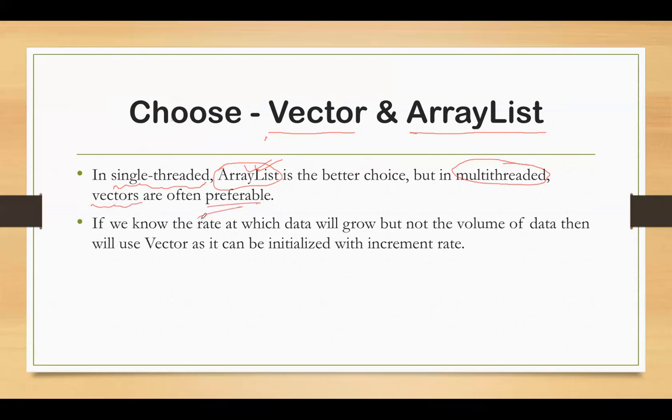If we know the rate at which data will be added to our underlying array but not the volume of how much data will be added, then in that case we will use Vector because we can initialize it with an increment rate it should use while doing dynamic growth of the underlying array.